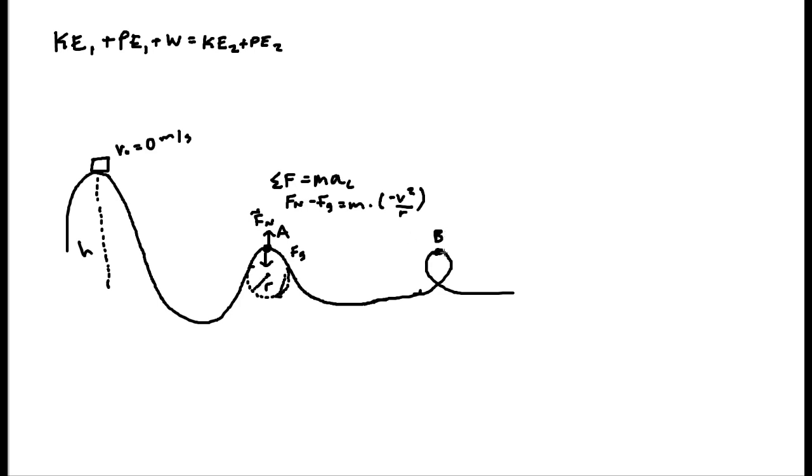Now, over here, my normal force and my weight are working with each other at point B. And so if I do the same thing, then I've got normal force directed down and weight directed down. So it's negative Fn minus Fg equals M times negative V squared over R. But all of those negatives just cancel out. So it leaves me with what I'd expect, the two forces working together to give me a centripetal acceleration.